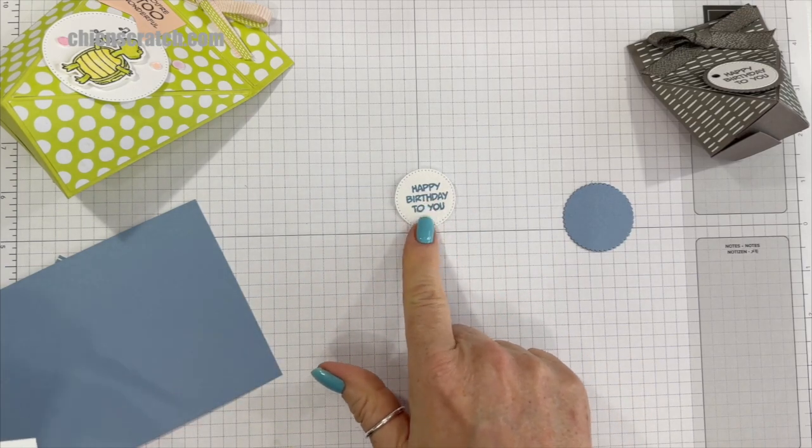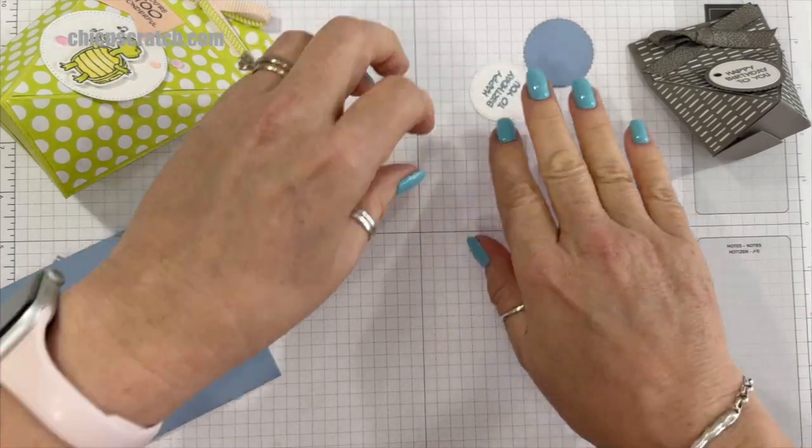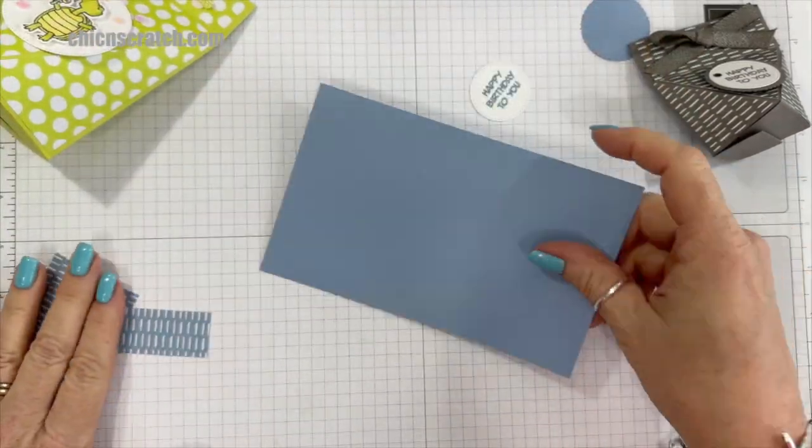Since I've already cut it out, we'll just pretend that I just used the stamping cutting emboss machine. This is using the Stylish Shape dies. So let's set these over here and let's go ahead and make the box.